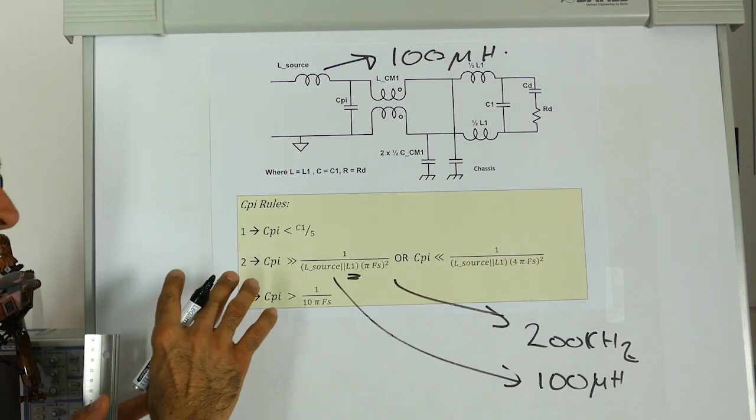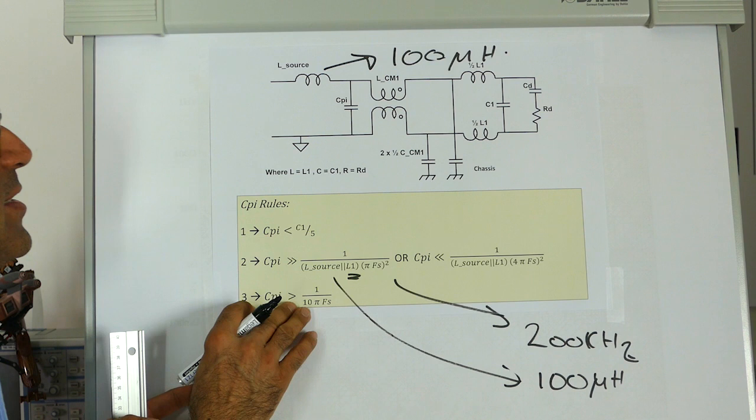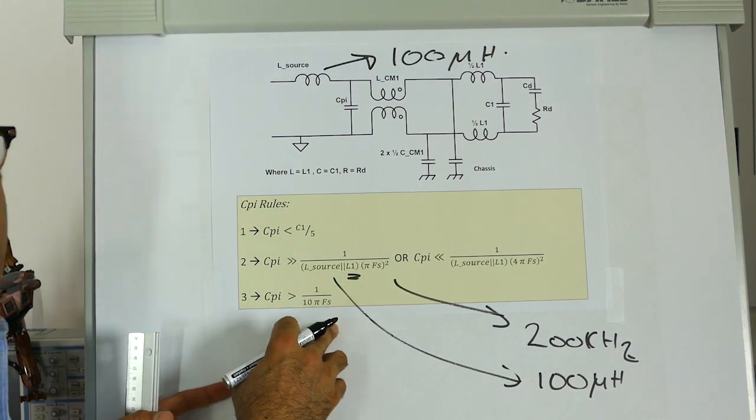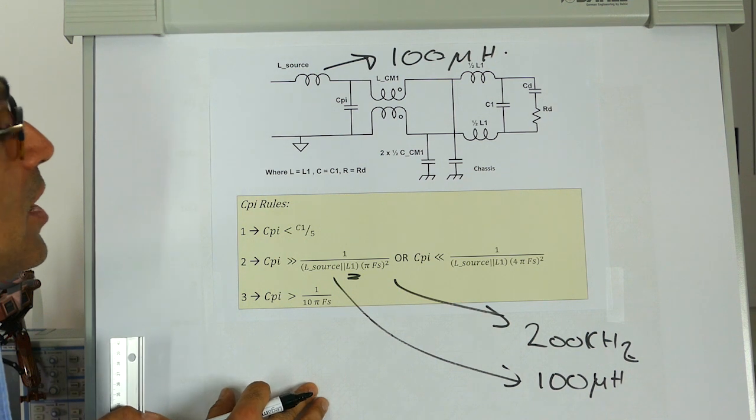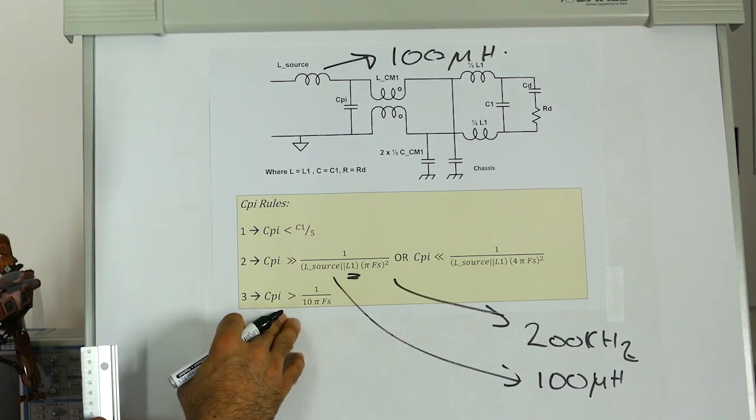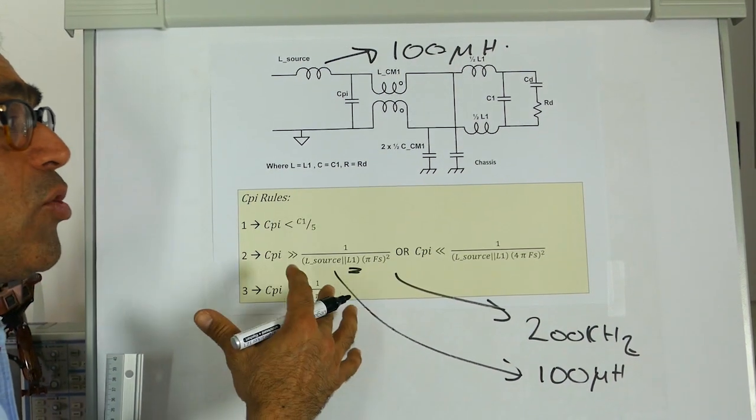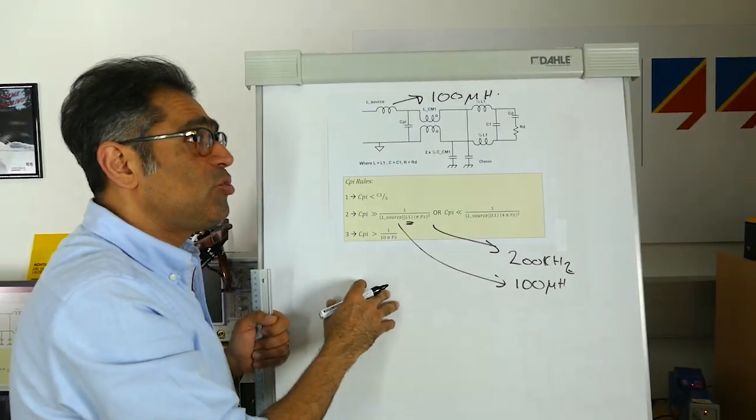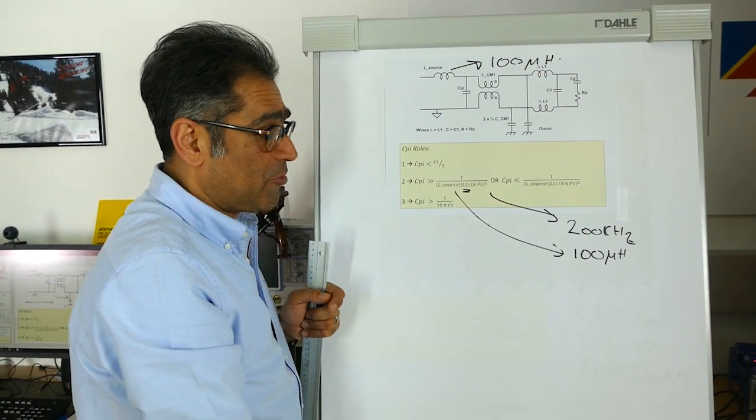Finally, there is rule three. Again, I won't go through the derivations of this which says Cpi has to be bigger than 1 over 10pi FS when FS is the switching frequency. Armed with these three rules, we can very quickly narrow down what values of Cpi we can have if we use the impedance paper that we have discussed before.